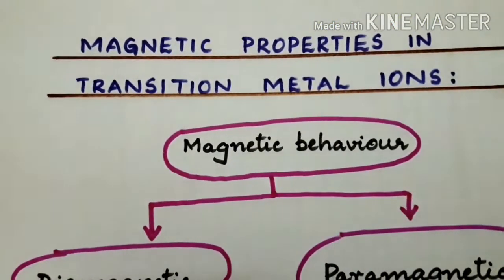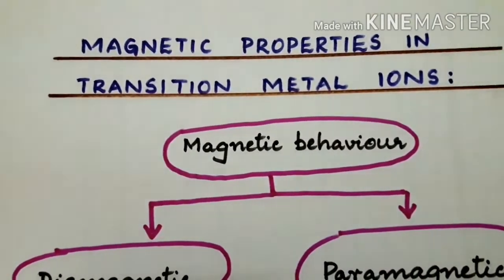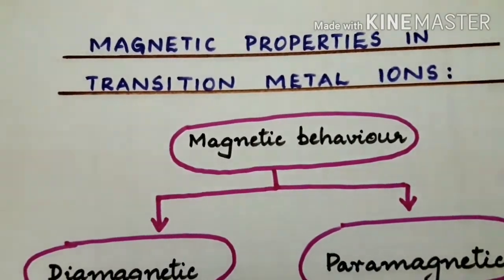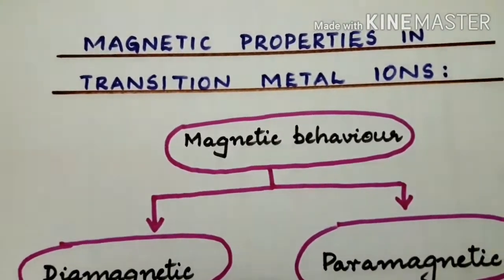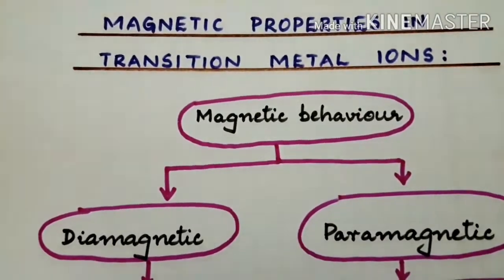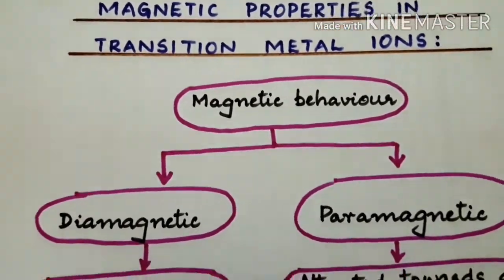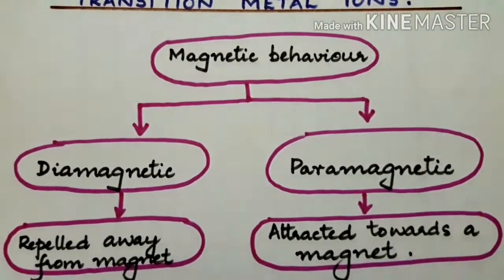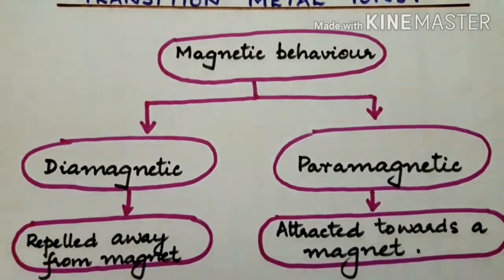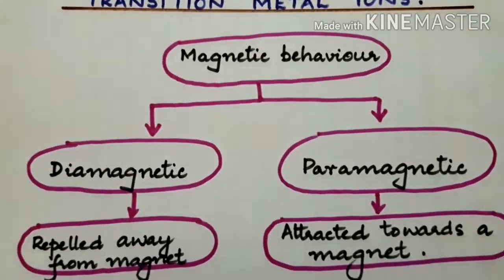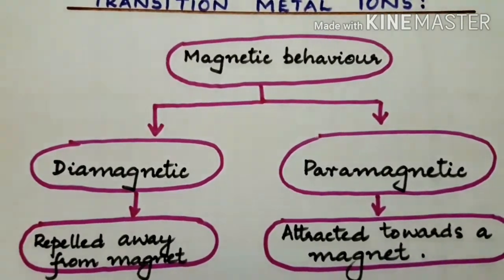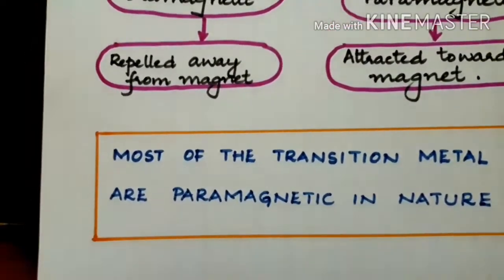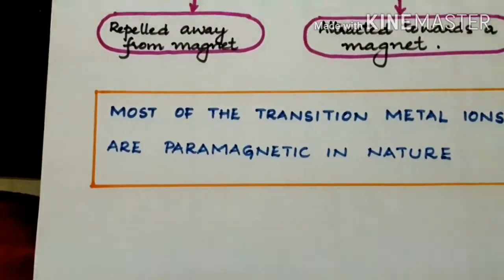Today we will be discussing magnetic properties in D-block metal ions or transition metal ions. There are two types of magnetic behavior: diamagnetic or paramagnetic. Diamagnetic substances are those which are repelled away from the magnet, whereas paramagnetic substances are attracted towards the magnet. Paramagnetic substances contain at least one unpaired electron, and most D-block elements in the ionic state are found to be paramagnetic in nature.